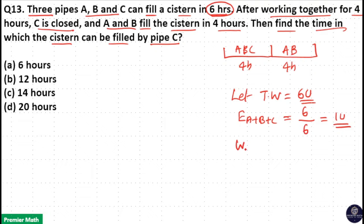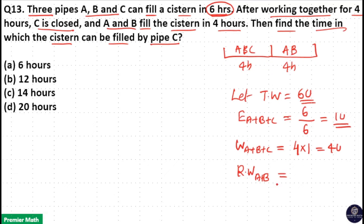Work completed by A, B and C together in 4 hours is 4 multiplied by their efficiency of 1 unit, which equals 4 units. Then the remaining work completed by A and B is total work 6 units minus completed work 4 units, so remaining work is 2 units.